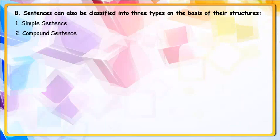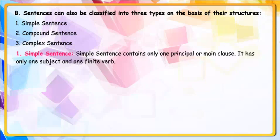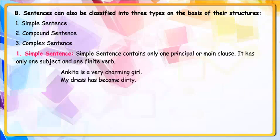Sentences can also be classified into three types on the basis of their structures: Simple Sentence, Compound Sentence, and Complex Sentence. Simple Sentence contains only one principal or main clause. For example: Ankhita is a very charming girl. My dress has become dirty.